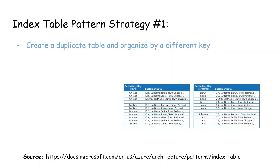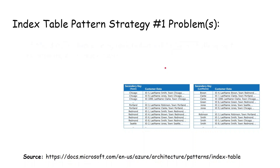There are a couple of strategies for structuring our index table. The first strategy is to create a duplicate table organized by a different key. You can create multiple different tables, each with a different secondary key — since we can only have one primary key (the customer ID), the secondary key could be, for example, town or last name. If I want to query customer data based on town or last name, I can locate that data very quickly using this strategy.